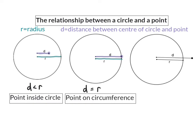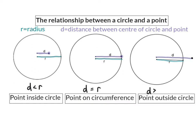Our last option is where the point is on the outside of the circle, and here the distance between the center of the circle and the point is longer or bigger than the radius. So here we can write down that the distance d will be bigger than the radius.